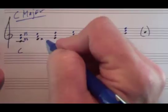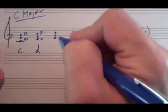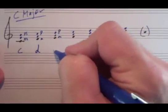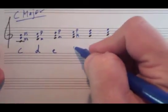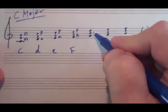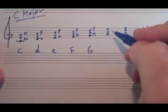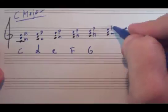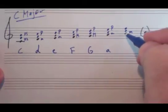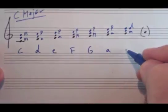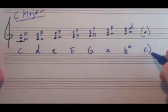D to F is a minor third, D to A is a perfect fifth, so this is a D minor triad. E to G is a minor third, E to B is a perfect fifth, so this is E minor. F to A is a major third, F to C is a perfect fifth, so this is F major. G to B is a major third, G to D is a perfect fifth. A to C is a minor third, A to E is a perfect fifth, so A minor. B to D is a minor third and B to F diminished fifth. So this is our only diminished chord in the major scale on the seventh degree, B diminished.